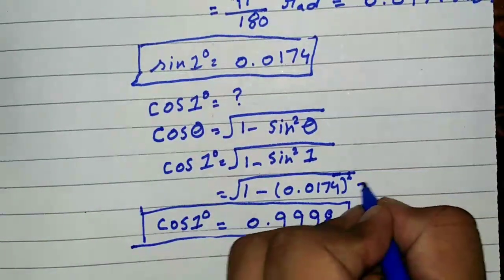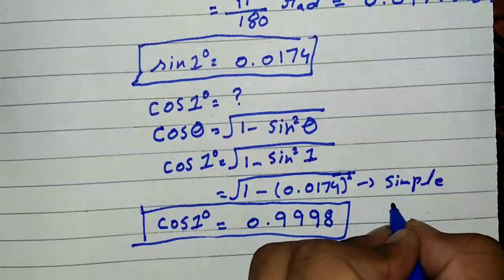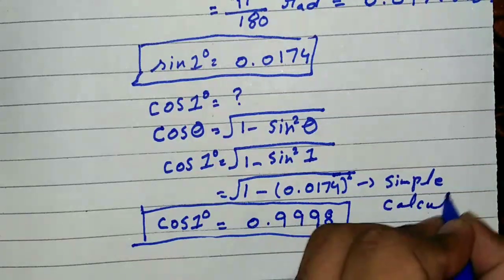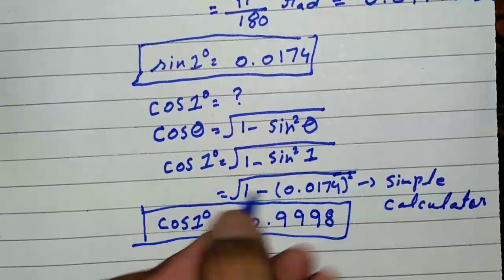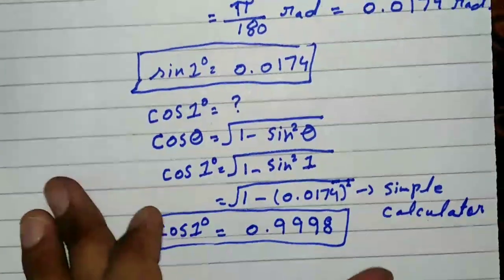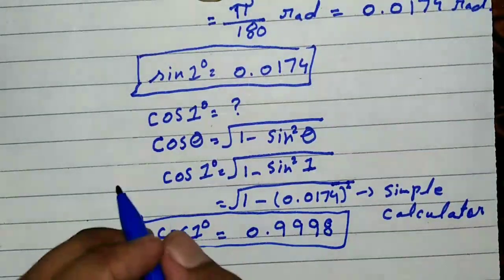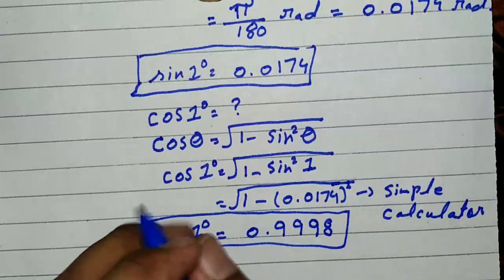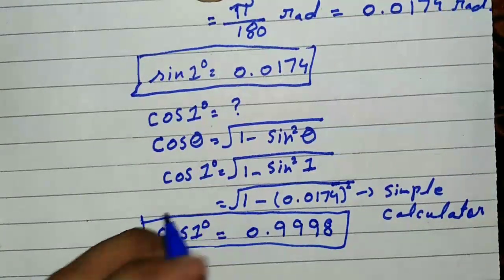You can use a simple calculator or hand simplification. These are the values of sine one degree and cos one degree without using any trigonometric table or calculator. In the next video we will find the value of cos two degree and sine two degree.